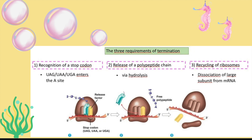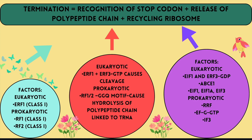In this slide I summarize the overall termination process. First, recognition of stop codon; then release of polypeptide chain; lastly, recycling of ribosomes. Remember: tRNA is not involved in termination; tRNA and rRNA play reduced roles in termination. For recognition of stop codon: eukaryote uses eRF1; prokaryote uses RF1 and RF2. For release of polypeptide chain: eukaryote uses eRF1 and eRF3-GTP; prokaryote uses RF1/RF2 with GGQ motif causing hydrolysis of the polypeptide chain linked to tRNA.